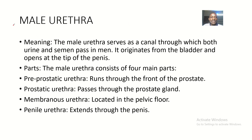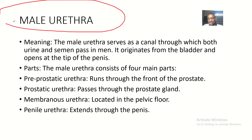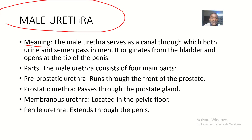Let's talk about the male urethra first, then we'll finish by talking about the female urethra. When we are done talking about both urethras, you should know the differences between them. The male urethra serves as a canal through which both urine and semen pass in men, while in females it is only urine.